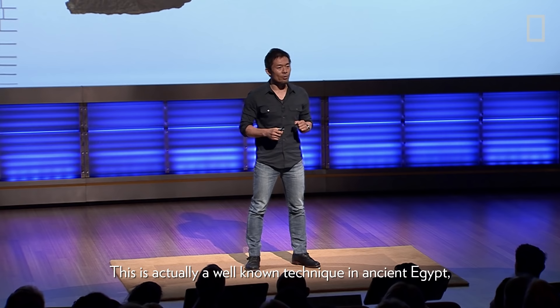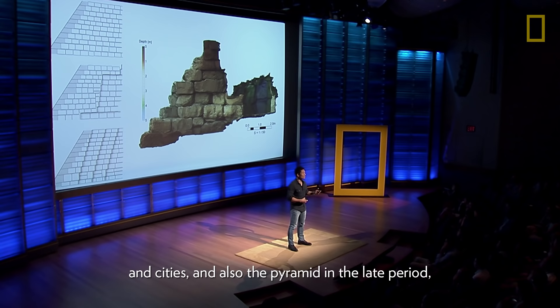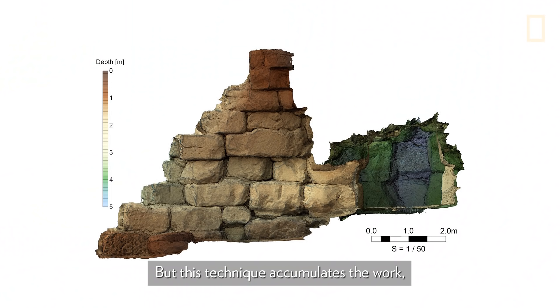This is actually a well-known technique in ancient Egypt called the chamber method, which was applied to the construction of temples, cities, and pyramids in the late period and Middle Kingdom. This technique accumulates work in a remarkably economical way. But we did not know this technique was actually applied in Old Kingdom pyramids — this is probably the first known instance.